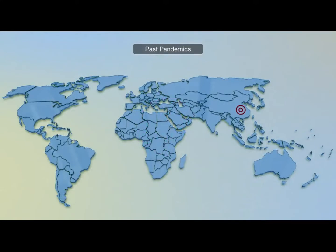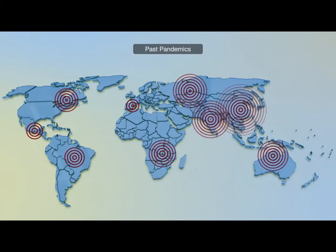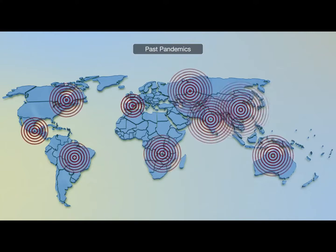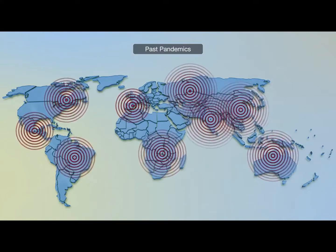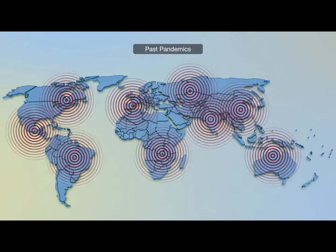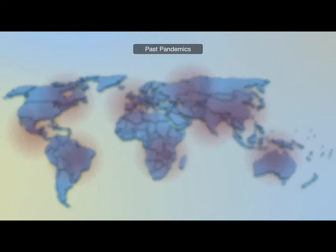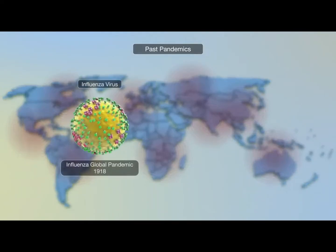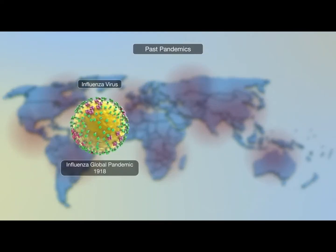Pandemics indicate outbreaks of disease that spread to cover an entire region or the world. A pandemic can result in massive loss of life. In the last 100 years, there have been four global pandemics, the worst being the 1918 influenza pandemic, resulting in an estimated 50 to 100 million deaths.